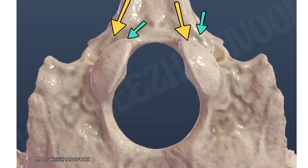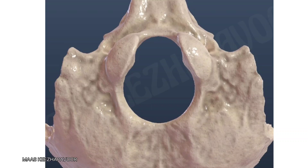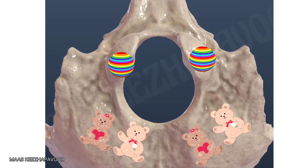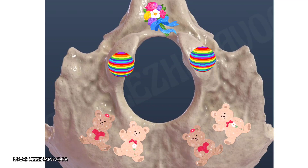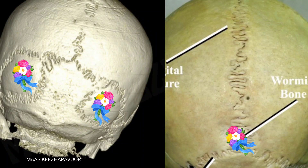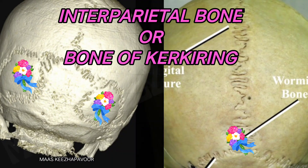The basilar part unites with the occipital condyles by the 6th year of life. The parts which develop by cartilaginous ossification are: the lower part of the squamous part of the occipital bone below the external occipital protuberance, the occipital condyles, and the basilar part. The squamous part above the highest nuchal line may remain separate throughout life and is known as the interparietal bone or bone of Inca.